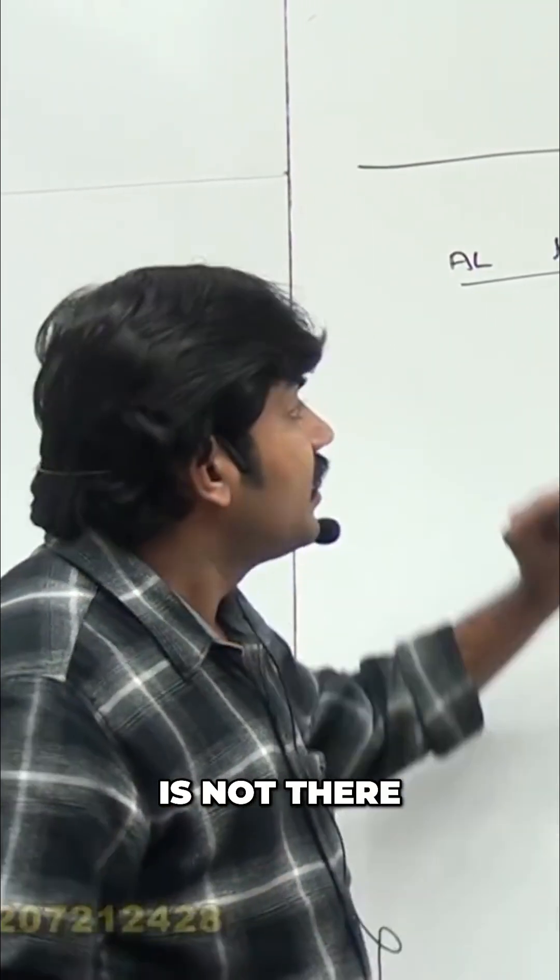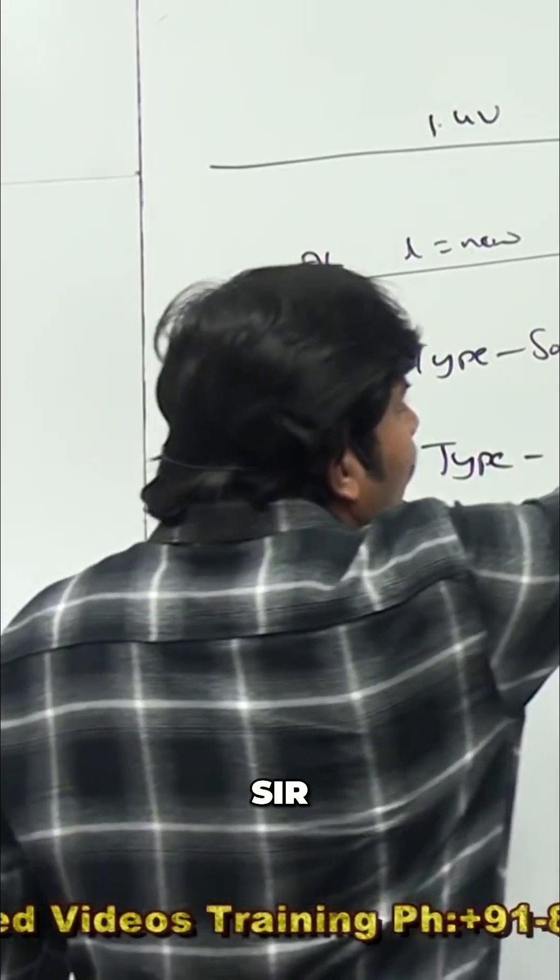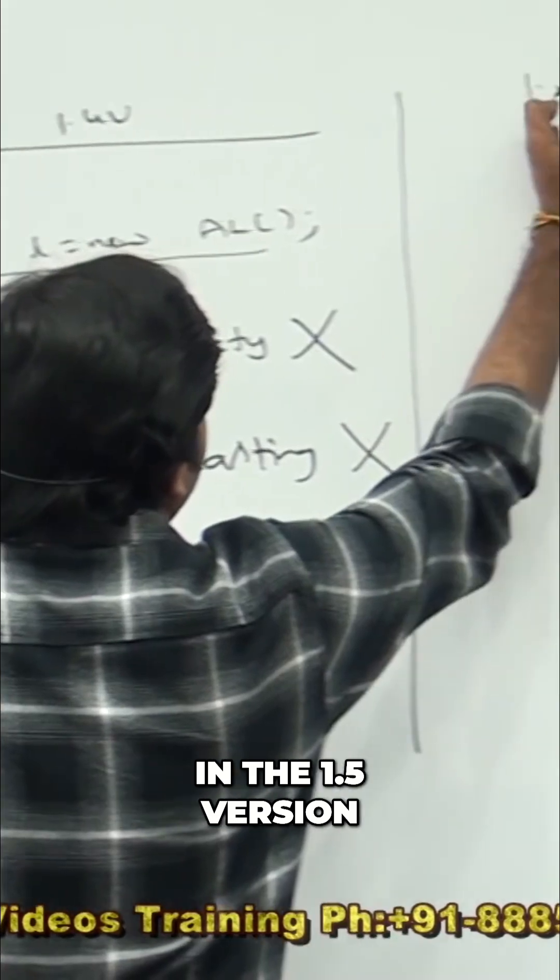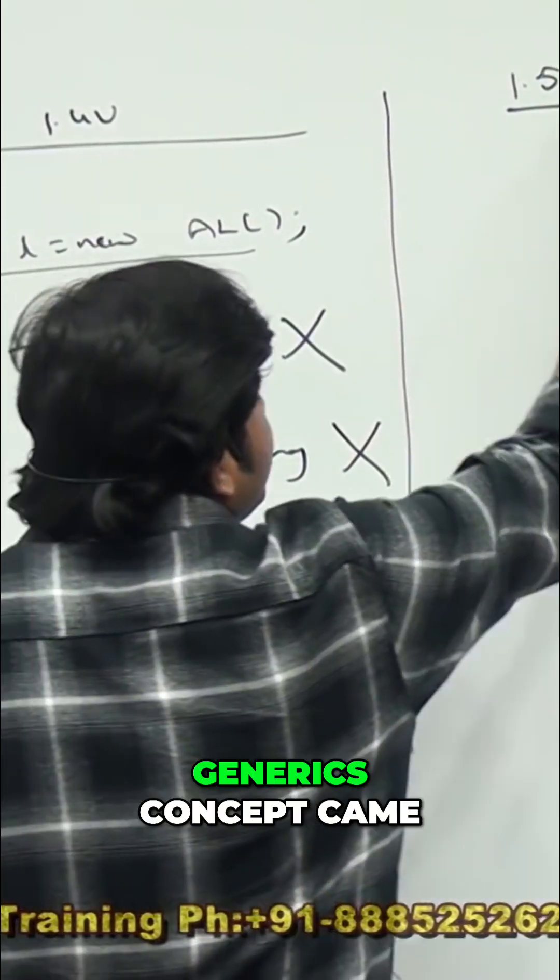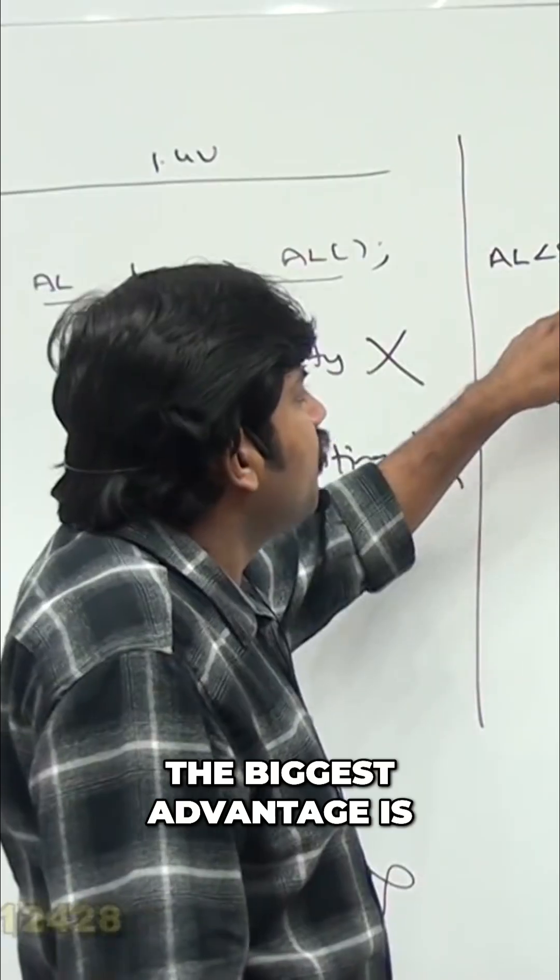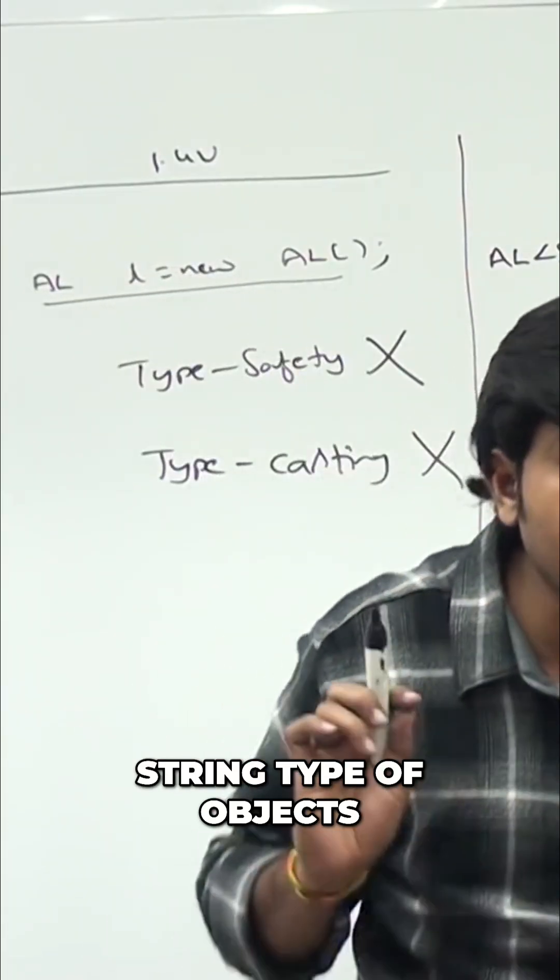Type casting is the bigger headache. Luckily in the 1.5 version, generics concept came. The biggest advantage is for this ArrayList we can add only String type of objects. By mistake if you are trying to add any other type, compile time error you are going to get.